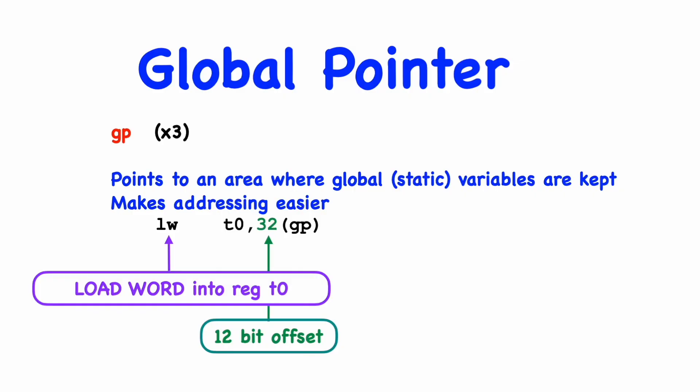Finally, I want to mention the global pointer and the thread pointer registers. You might not ever need to use these registers, but I want to mention them just for completeness. The global pointer, or GP register, points to an area where global or static variables will be kept. And the purpose of this register is to make addressing those variables easier. And here's an example, the load word instruction is going to copy a word from memory into some register, in this case T0. And it takes an offset plus a register, and so we could use the GP register to get at the global or static variables.